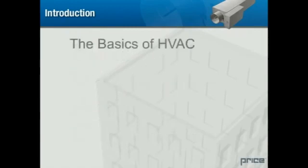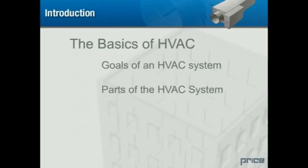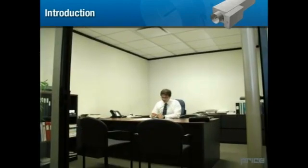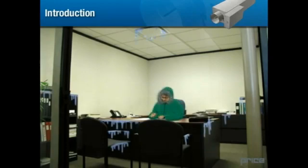In this unit, we will identify the purpose and goals of the HVAC system, describe basic HVAC parts, and describe how these parts work together. Air quality is an essential consideration in maintaining the productivity, comfort, and health of the occupants and should not be trivialized. If air quality and temperature are not maintained, occupant comfort in the workplace can suffer, directly affecting productivity and morale.